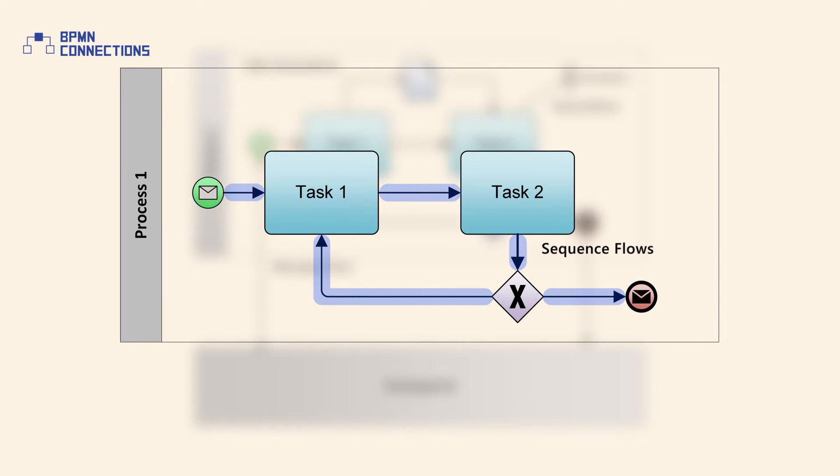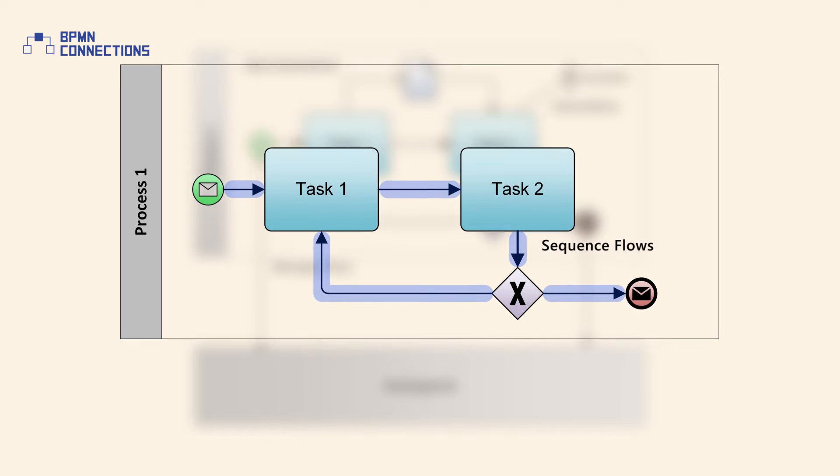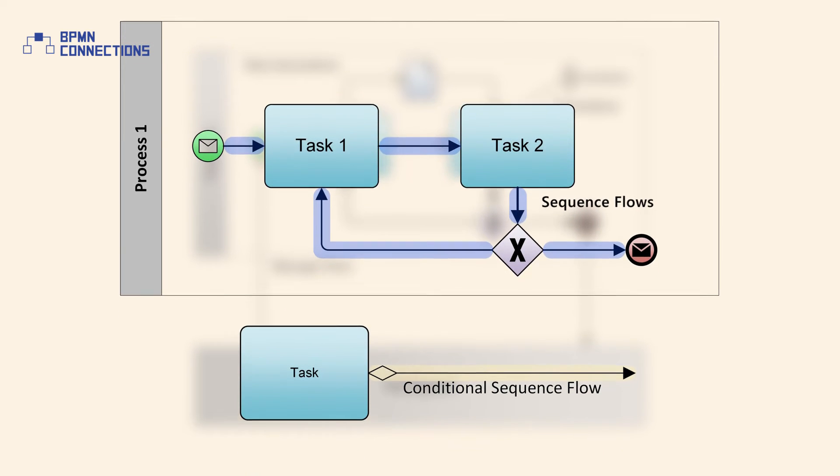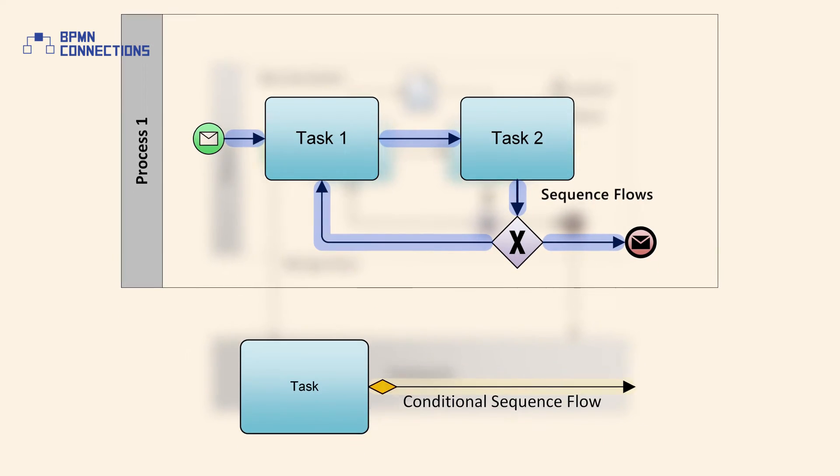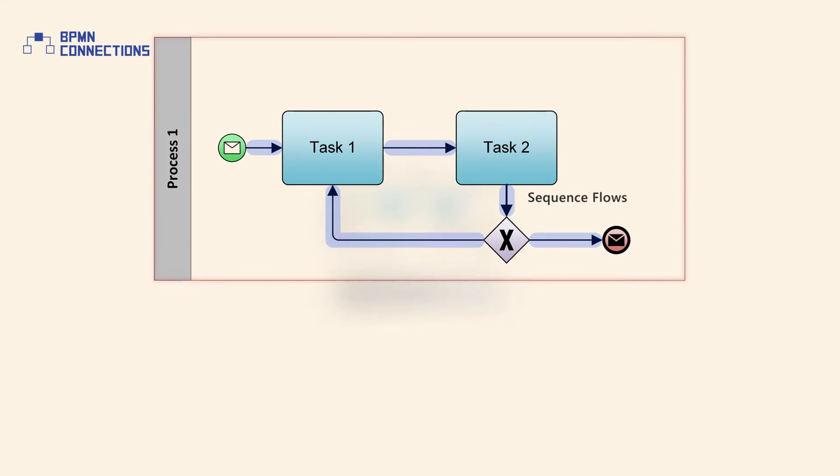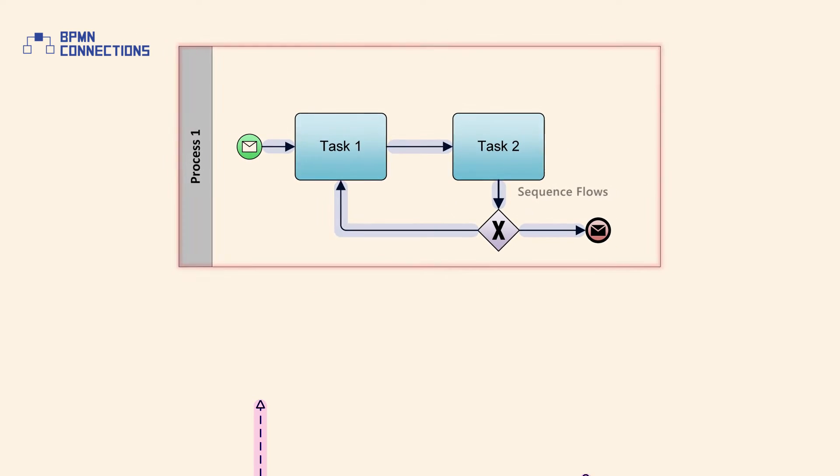directed solid lines. Sequence flows define the order of flow elements in a process diagram and a choreography diagram. A sequence flow defines a process's behavior or control flow. A sequence flow can also define a condition when represented with a mini diamond. Sequence flows can only be used within a process and cannot cross the boundary of a pool.